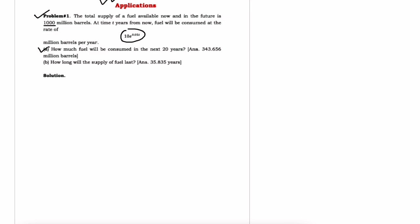The question is: how much fuel will be consumed in the next 20 years? The next 20 years means from 0 to 20 — 0 is today and 20 is the upper limit. The rate function is 10e to the power 0.05t dt, so if you evaluate this integral you will get the fuel consumed in the next 20 years.